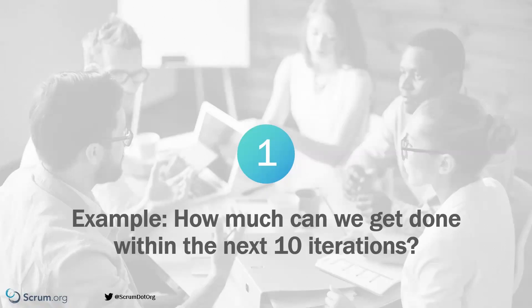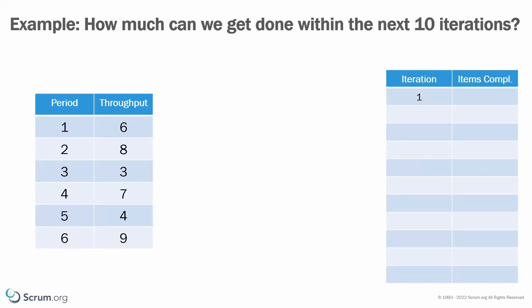Firstly, we want to explore the question we get asked often: how much work can be done within a certain time frame? In this example, we are going to have a look at iterations of one week. As you can see from this list on the left side, we assume that we have historic data from six past periods, and here a period is a week — but as already mentioned, it can be any other period of time.